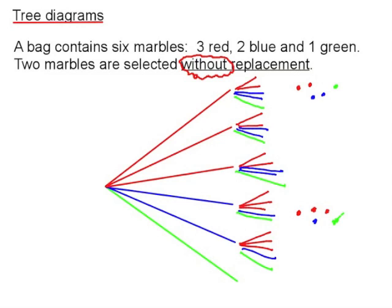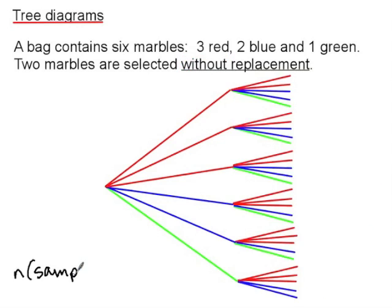And if the first marble taken out was green, it means that in the bag we still have the three red marbles but no greens. The size of the sample space is 30.